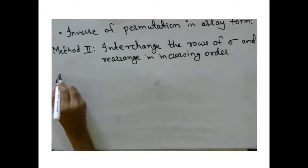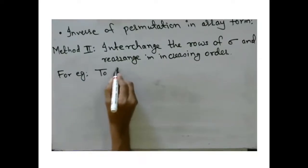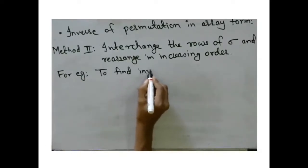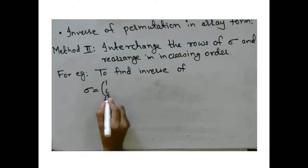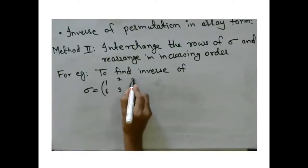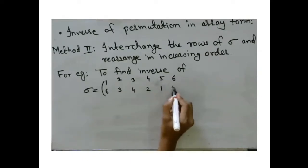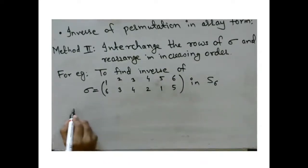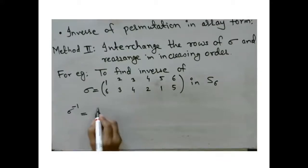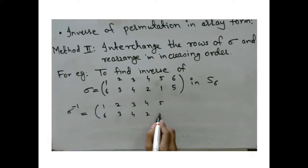To find the inverse of sigma — where 1 maps to 6, 2 maps to 3, 3 maps to 4, 4 maps to 2, 5 maps to 1, and 6 maps to 5 in S6 — we write sigma inverse by interchanging the rows: the bottom row becomes 6, 3, 4, 2, 1, 5 and the top row becomes 1, 2, 3, 4, 5, 6.